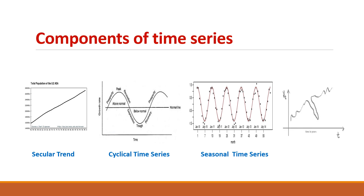The last component is irregular time series. In this kind of time series, variations occur in the Y variable because of some chance factors and it is also unpredictable. For example, any changes in demand because of floods, wars, strikes, or droughts may be examples of irregular time series.